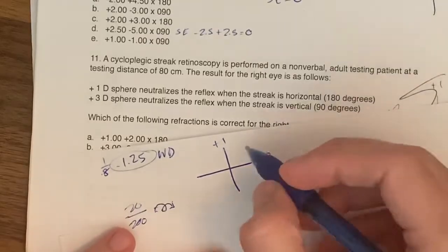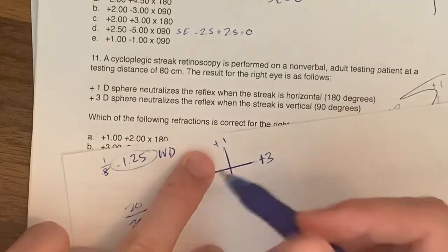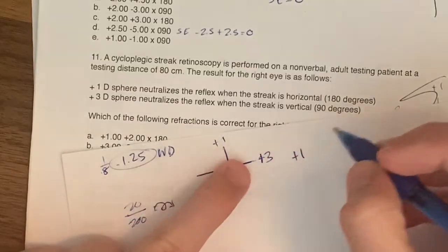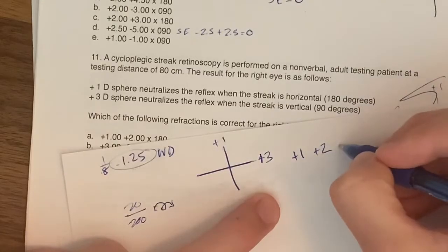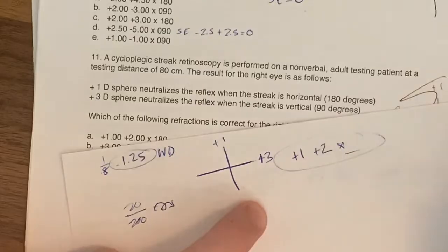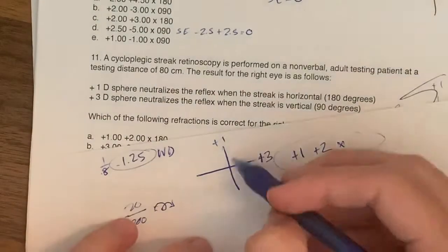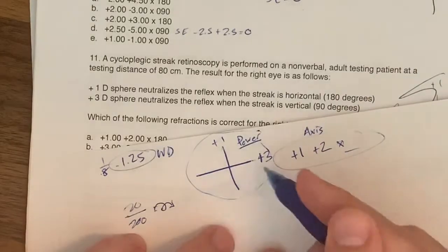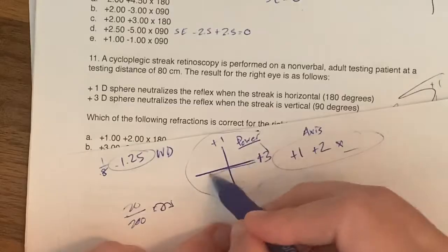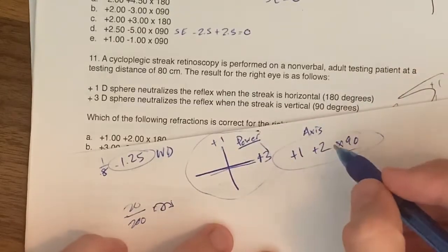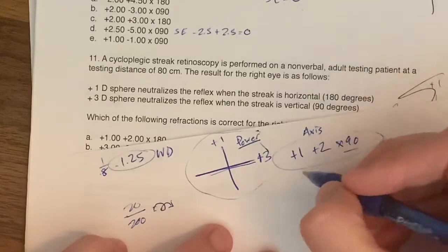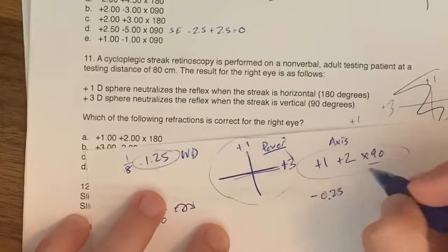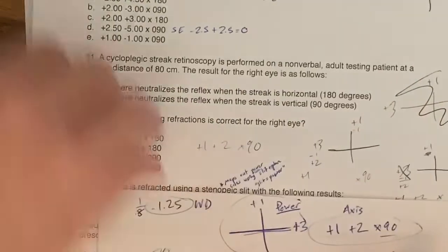Now we need to convert this to a prescription. We can't forget about our working distance, we'll correct that at the end. The way we convert this into a prescription, we want to use plus cylinder. So we'll start with the smallest number, the most negative. So that'd be our sphere, plus 1. And then the difference will be our cylinder, plus 2. Remember the convention for a prescription is it's an axis, this is the power cylinder. The power is 180, so that means the axis is 90. So times 90. Then at the end, we have to take our working distance off the cylinder, which was 1.25. So this is going to be negative 0.25 plus 2 times 90. That'd be C.